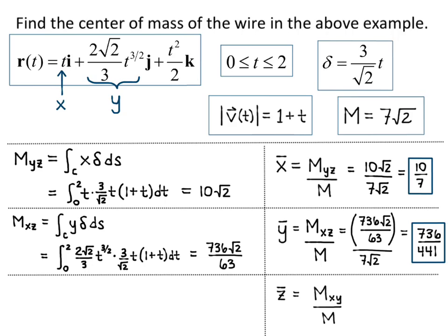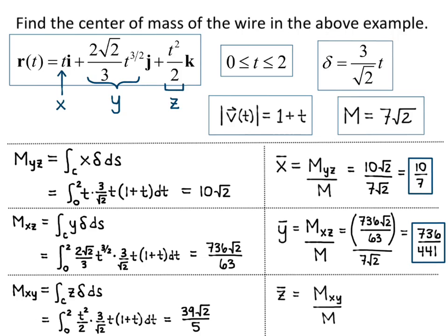z-bar equals m_xy divided by mass, and m_xy equals the line integral over C of z·delta ds. z is the k component of R, which is t²/2. So the integral is from 0 to 2 of (t²/2) times (3/√2)·t times (1 + t) dt. Evaluating gives 39√2/5, so z-bar is (39√2/5) divided by 7√2, which simplifies to 39/35.